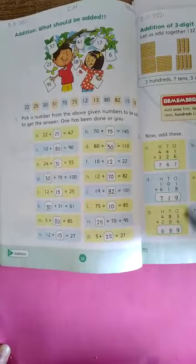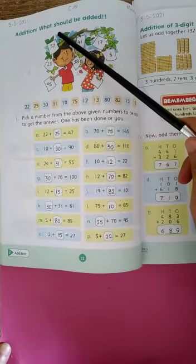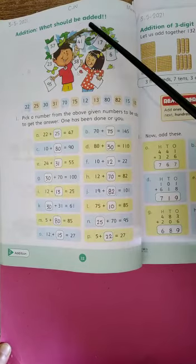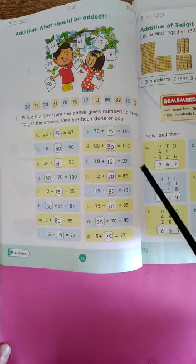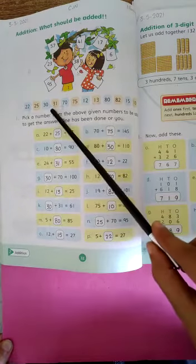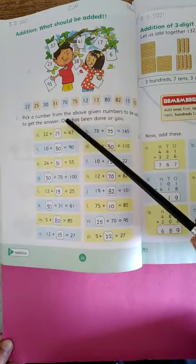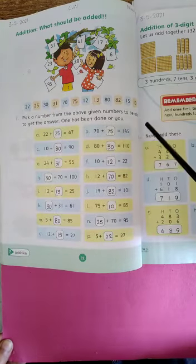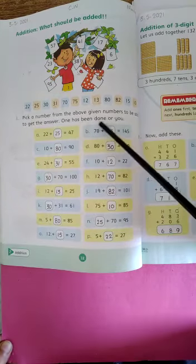Now come on the questions. Addition means plus karna. What should be added? Aap ne questions ko kaisi add karke solve karna hai. Now here are some numbers. Pick a number from the above given numbers to be added to get the answer. One has been done for you.